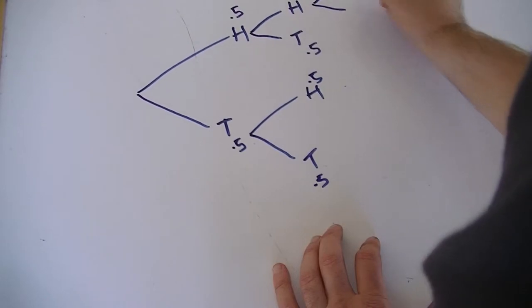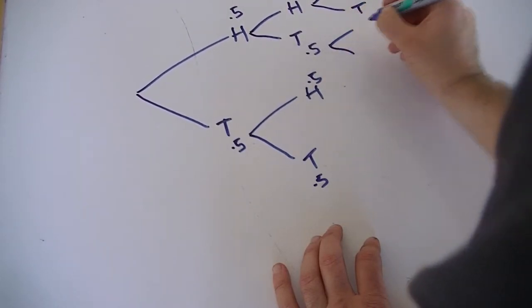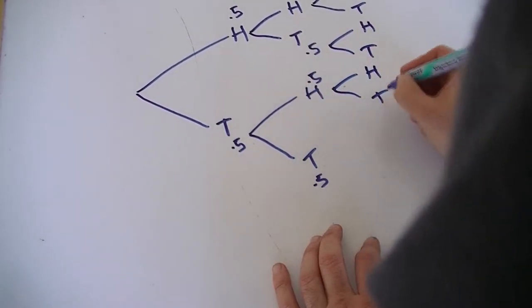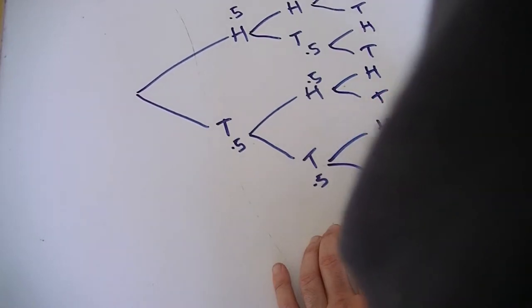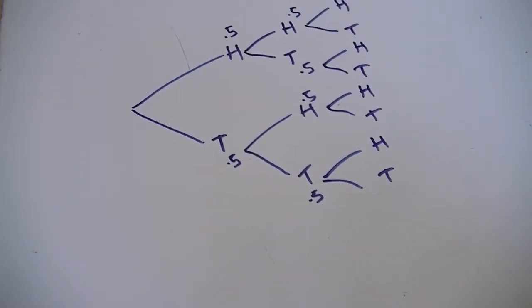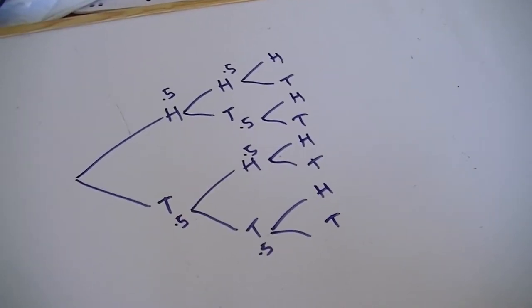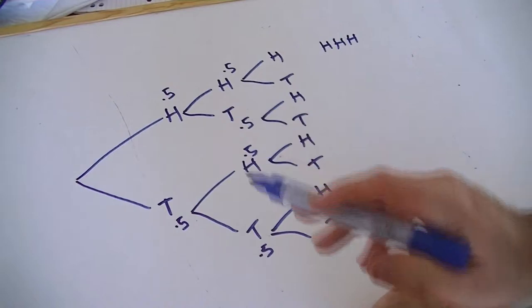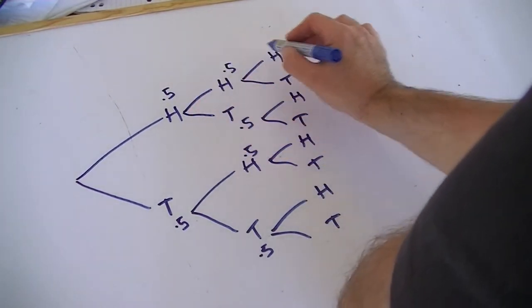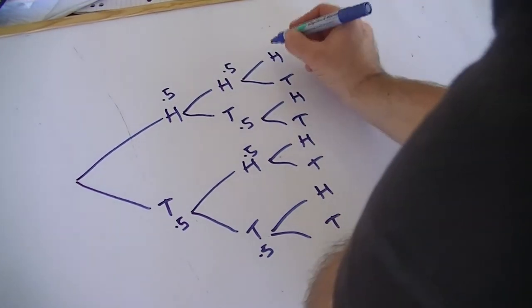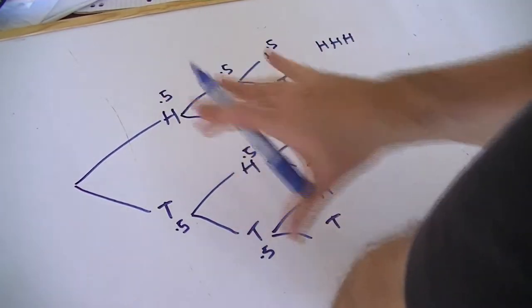So we have heads, tails, heads, tails, heads, tails, heads, tails — I've mapped out all the possibilities. I'm just going to adjust the camera. This branch here is heads-heads-heads, and I could actually calculate 0.5 times 0.5 times 0.5 to give me the probability of that happening. Each of these has a 0.5, so we're not just making the map — we can actually calculate the probabilities.